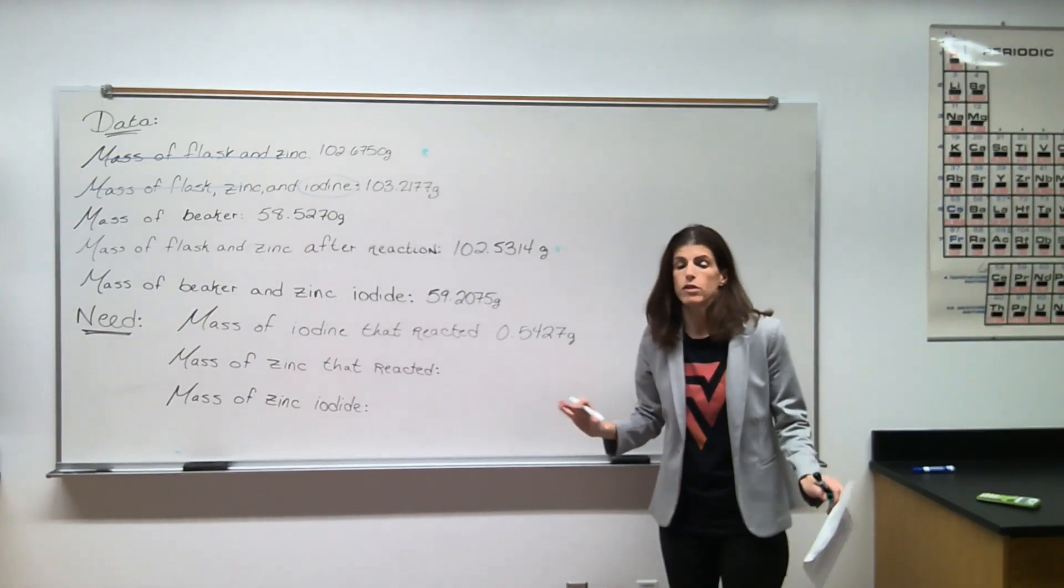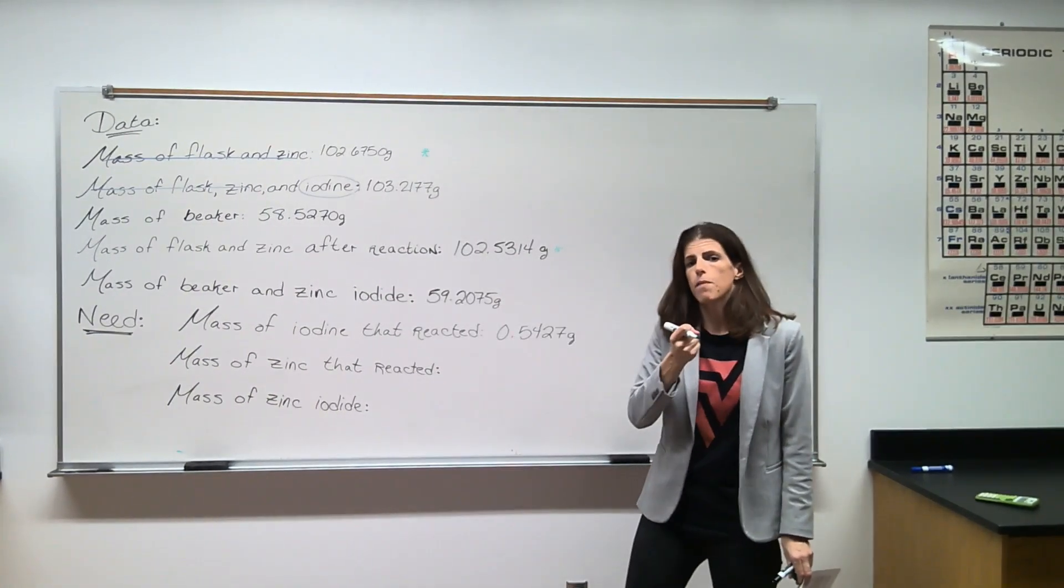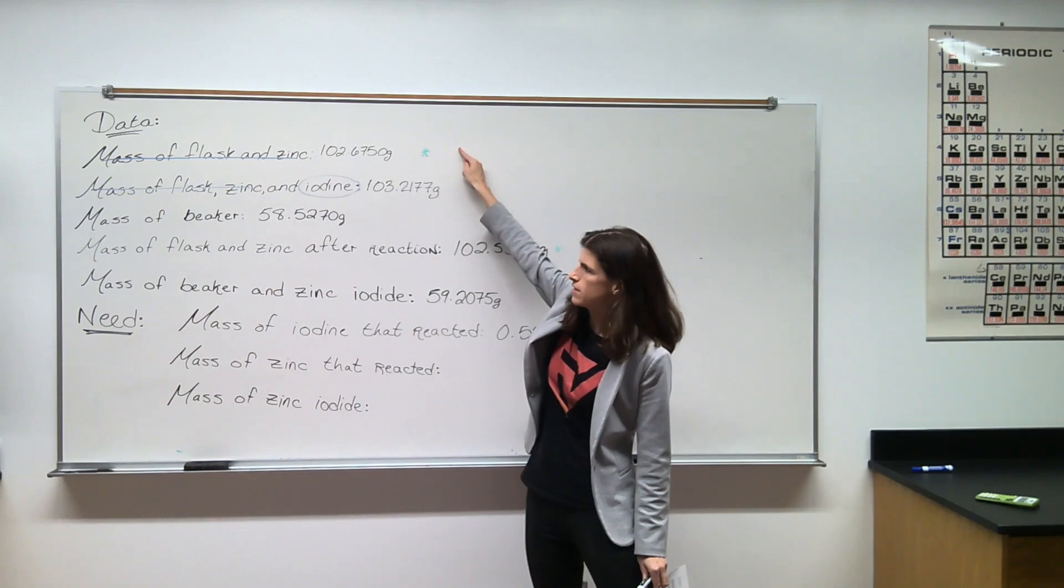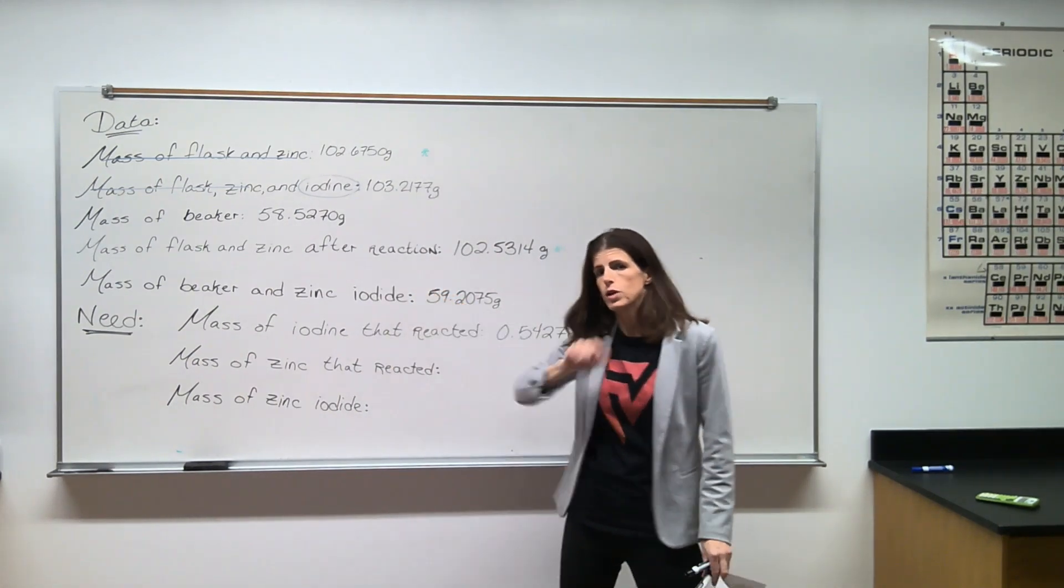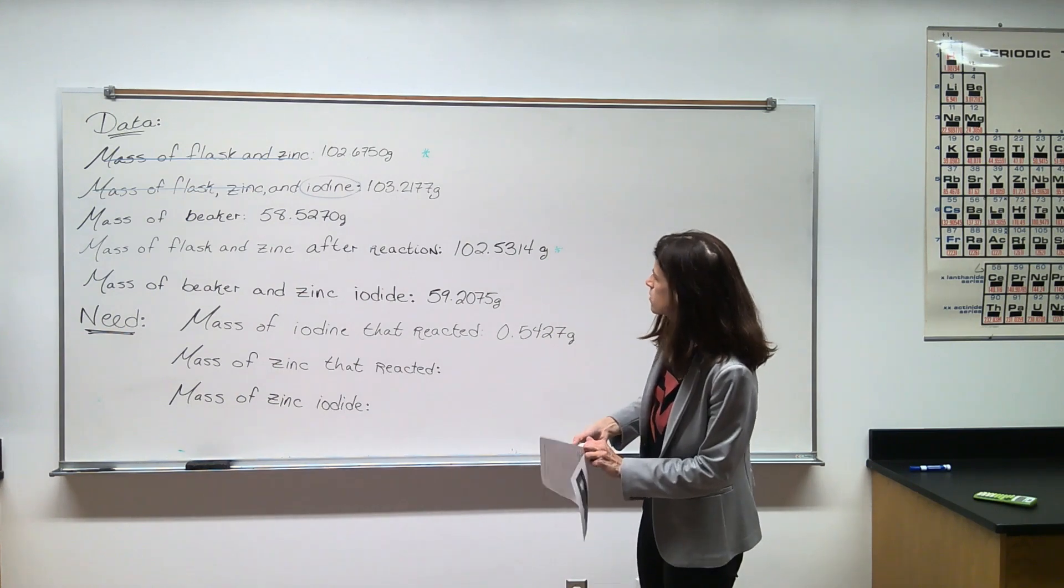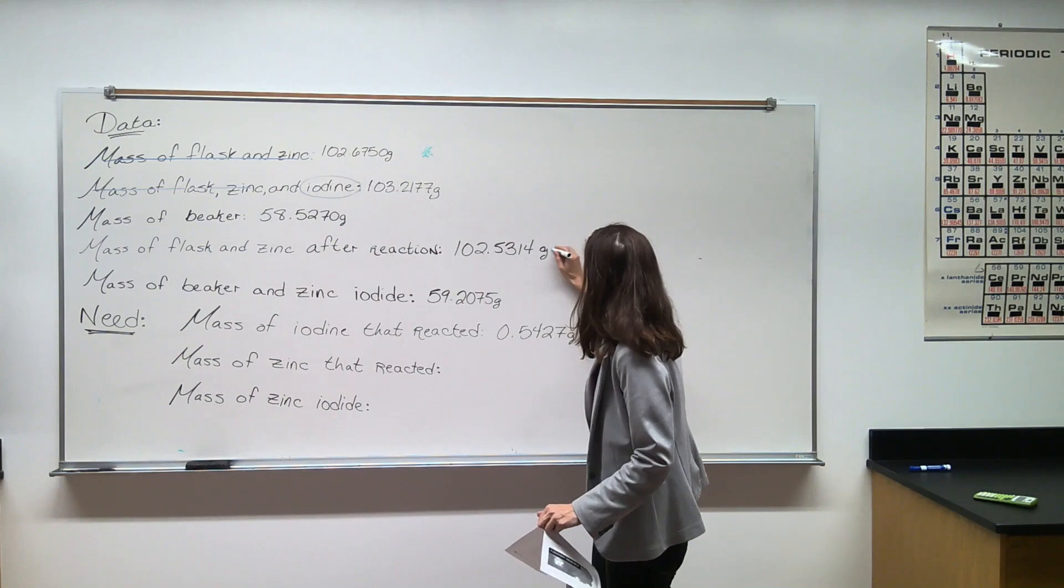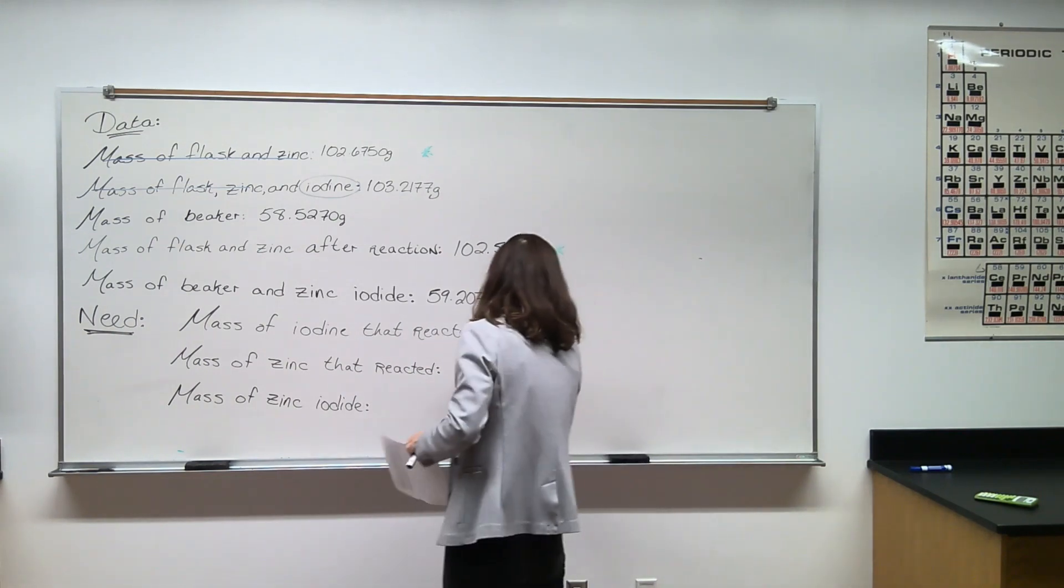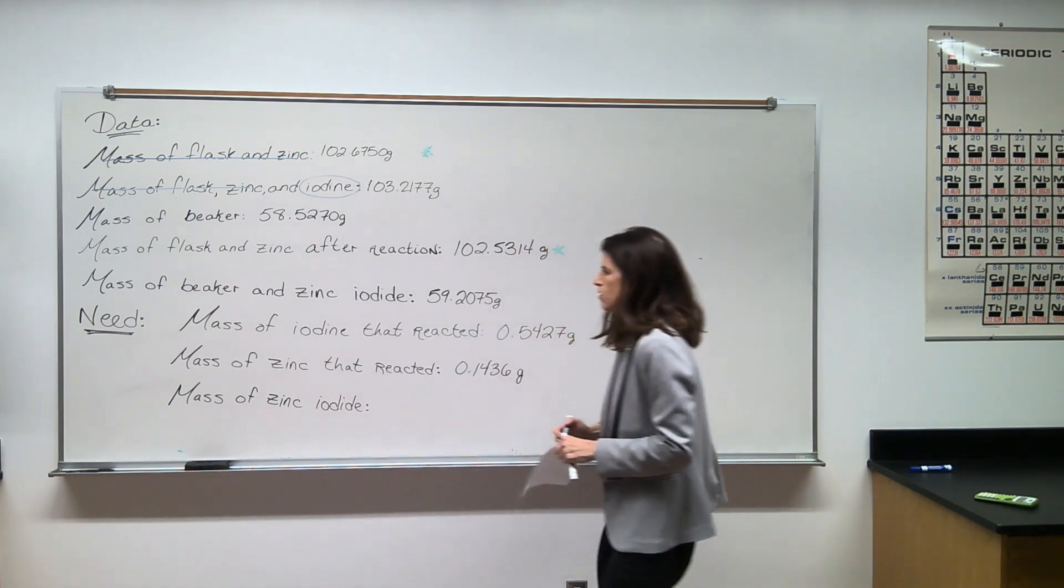This is a little bit different than the iodine one because zinc was our excess reagent. We don't care how much zinc we put in there in the first place. We only need how much zinc was actually used up when the zinc iodide was formed. So by comparing the mass of the flask and the zinc before and the mass of the flask and the zinc after, we know how much zinc went into that zinc iodide. So I'm going to just subtract these two lines.